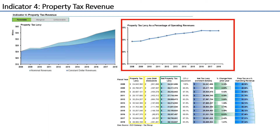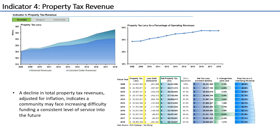Tracking the levy as a percentage of total revenues could reveal the operating budget's increasing reliance on property tax revenue. While a constant dollar decrease will show that the property tax has not been rising sufficiently to counter the effects of inflation, a nominal dollar decrease likely signals declining property values and may indicate significant fiscal stress on the horizon.